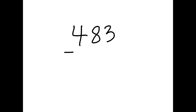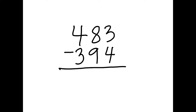Let's practice another one, and then I'll have you guys do 2 on your own. We have 483 take away 394. I've stacked everything up — ones together, tens together, hundreds together. Starting in the ones column, I see that I have more on the floor, so I need to go next door. I take a 10 from my 8, which becomes 7, and give that 10 to my 3, so that becomes 13. 13 take away 4 is 9.